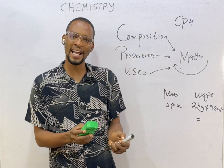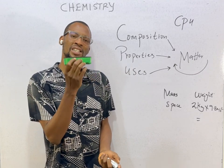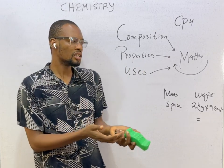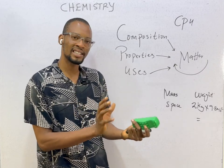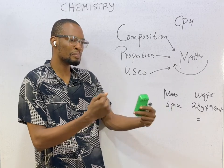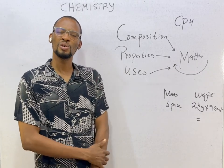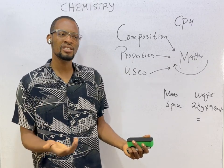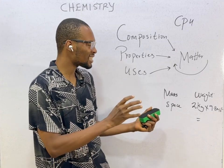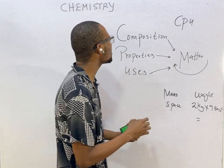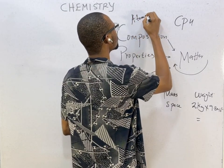Matter is anything that has mass and occupies space. If you put thousands of objects in a small room, it fills up and there is no space for anything else — this shows that objects occupy space. Examples of matter include human beings, your laptop, your car, the air you breathe, the water you drink, blood, oil — matter is all around us. Matter is composed of atoms and molecules.